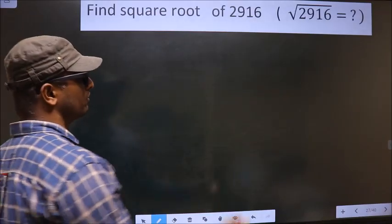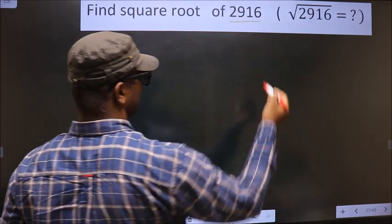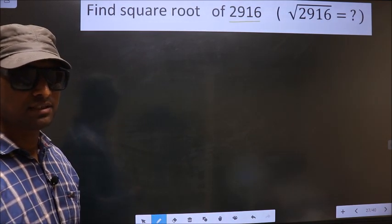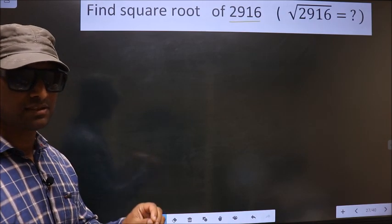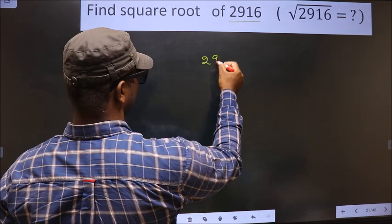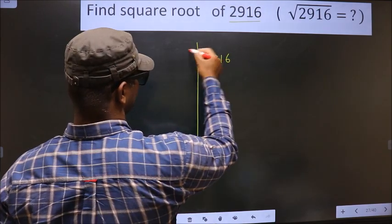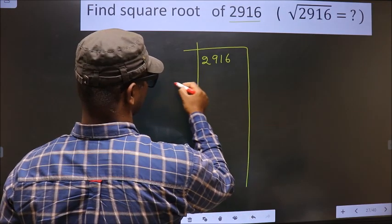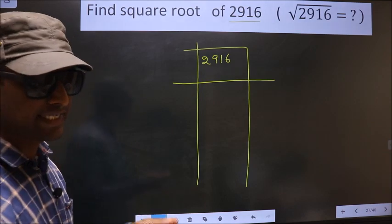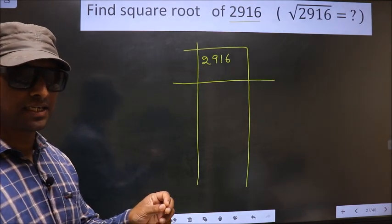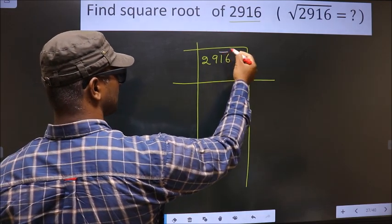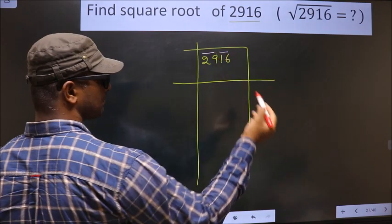Find the square root of 2916. To find the square root by long division method, first we have to frame it in this way: 2916. Now we should divide the given number into pairs starting from the right side — these two numbers form one pair and these two numbers form another pair.